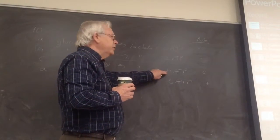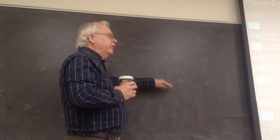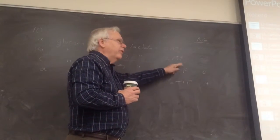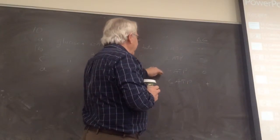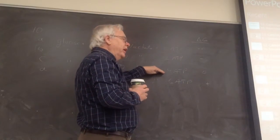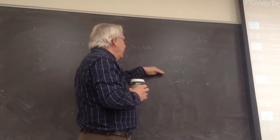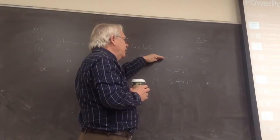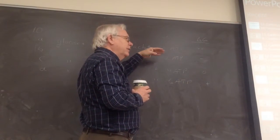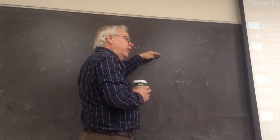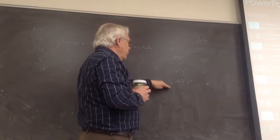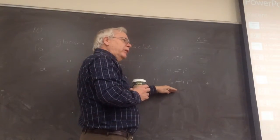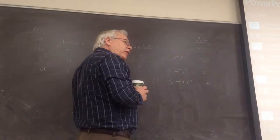If four is — these are rounded off — but if four is a break-even point, make two ATP, it's a certain degree negative. Two more ATP would be equivalent to any other.